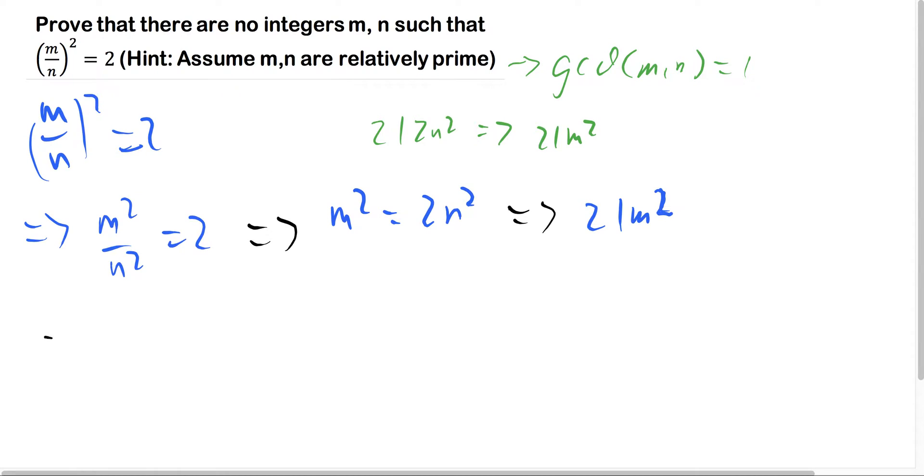So then moving on, if 2 divides m squared, then 2 must divide m. And if 2 divides m, then 4 divides m squared.